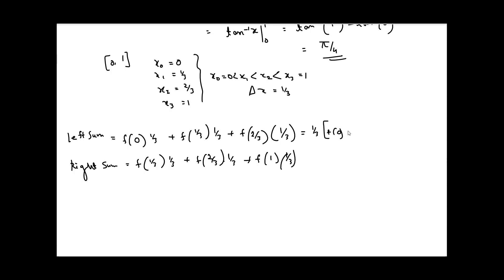Taking 1/3 common from the left sum gives us f(0) plus f(1/3) plus f(2/3). Since we know the function is 1 divided by x squared plus 1, we can calculate this value. Similarly for the right sum.